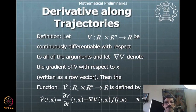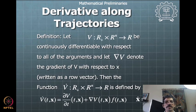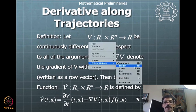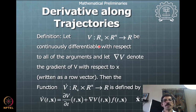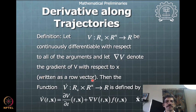The derivative along the trajectories is a concept developed for the same function v. If v is given as a function of time t and vector x belonging to ℝⁿ space, it is a real-valued function that is continuously differentiable with respect to all arguments. This is a necessary condition, and ∂v/∂x denotes the gradient of v with respect to x, written as a row vector.